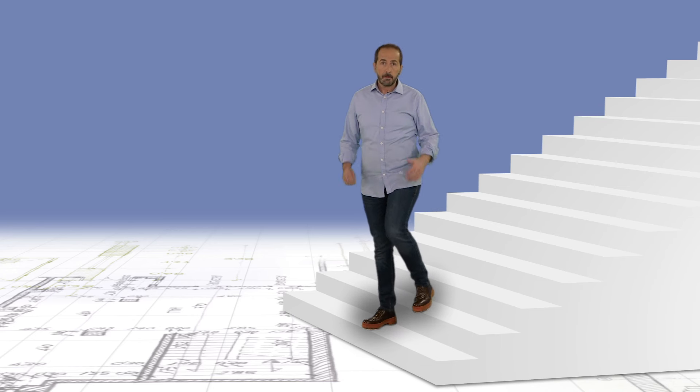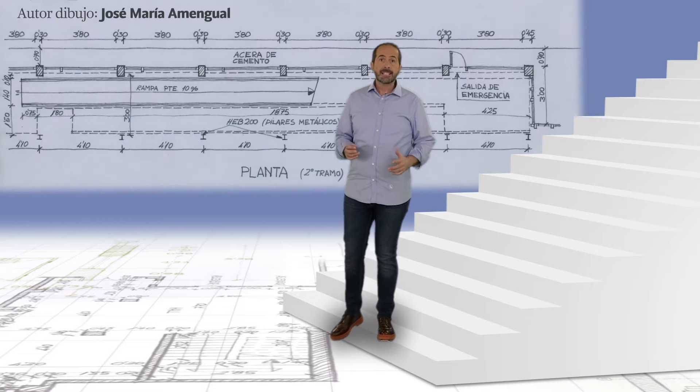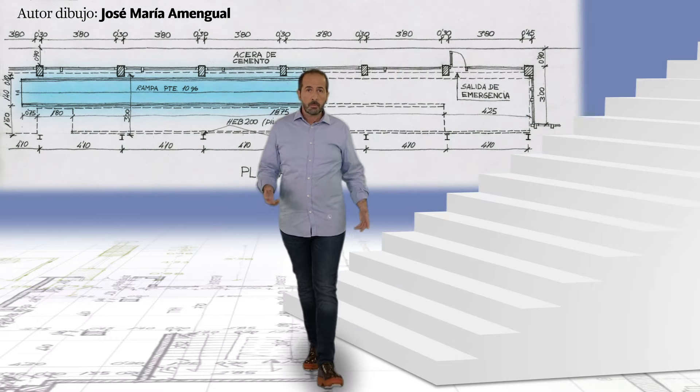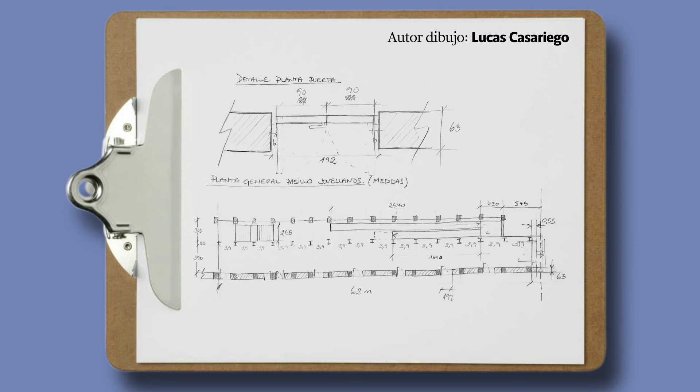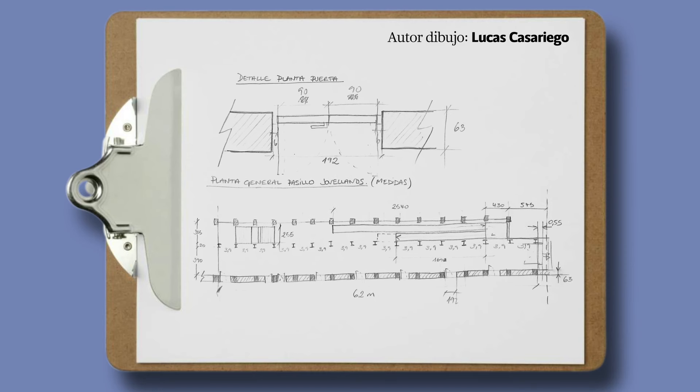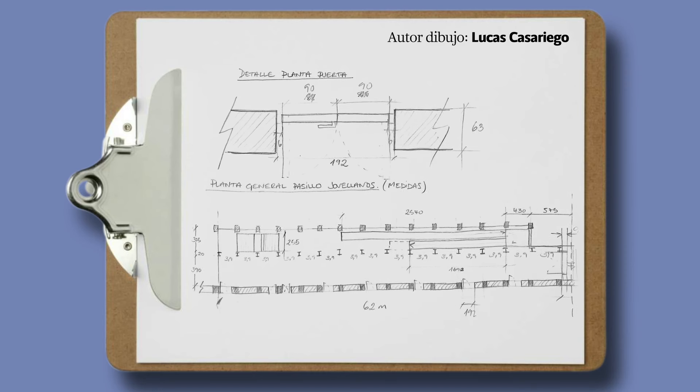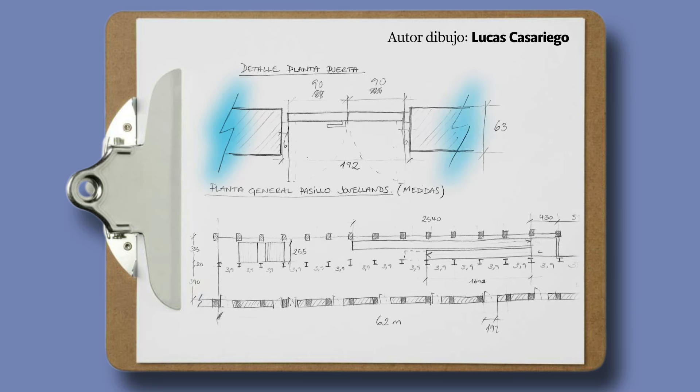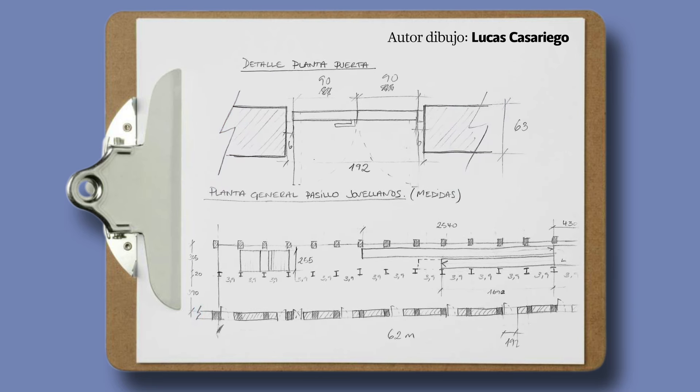Las escaleras y también las rampas se dibujan siempre en planta como si estuvieran vistas desde arriba. Si pasan a una planta superior o inferior que no estamos dibujando lo representamos con un corte en diagonal que nos recuerda la misma simbología que empleamos para dibujar un rayo en otro tipo de dibujo.